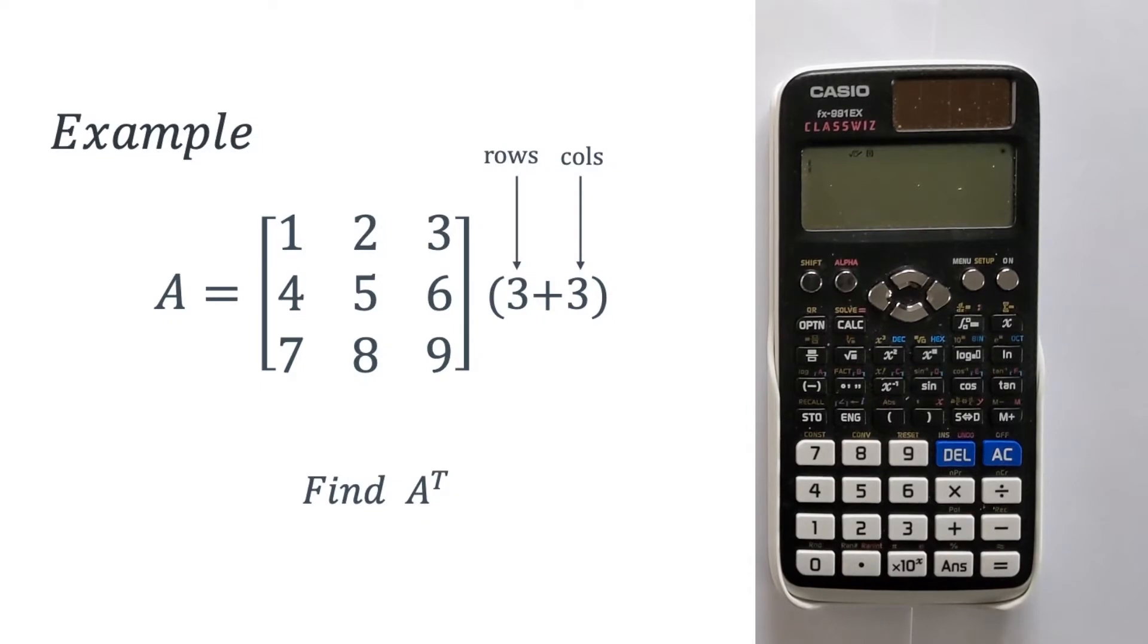So we've got a three by three matrix which is simply the matrix one, two, three, four, five, six, seven, eight, nine. Nice and easy to remember.